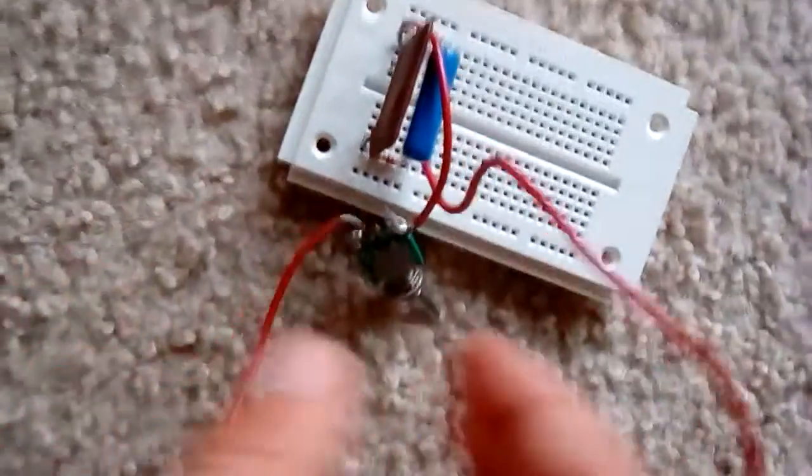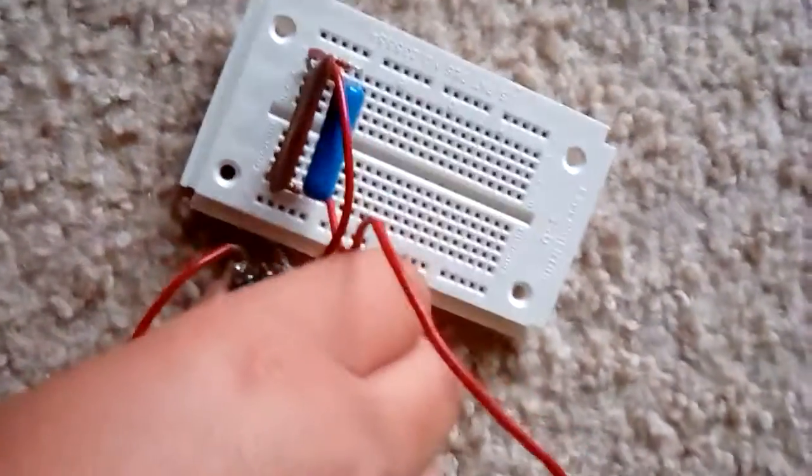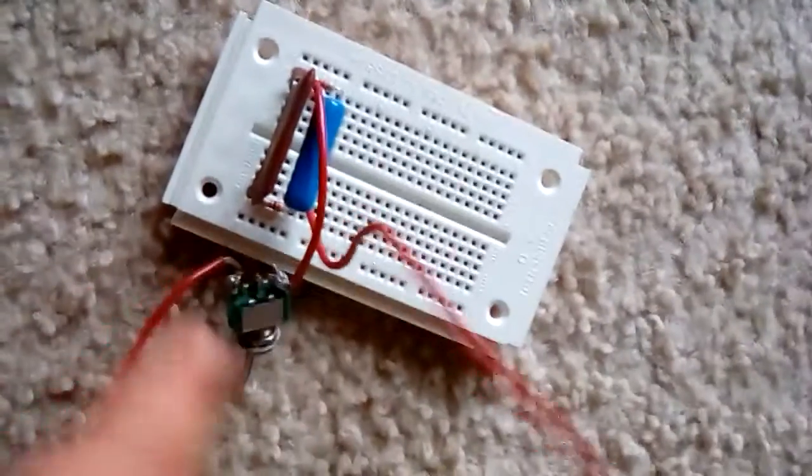On the right side, it would flow through and charge them. Then what you would do is, because there's resistors there, electricity would take the easiest path. You turn that switch and it would run through.